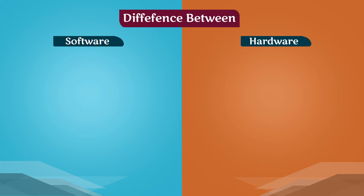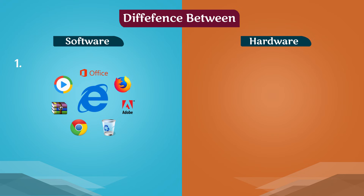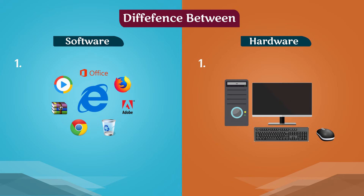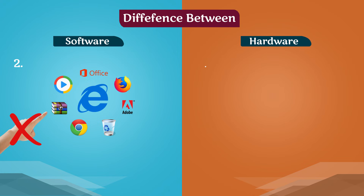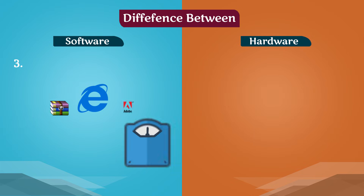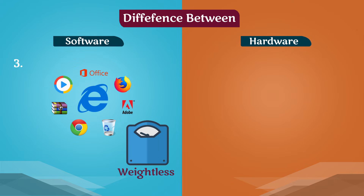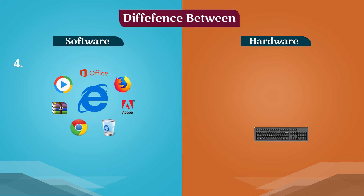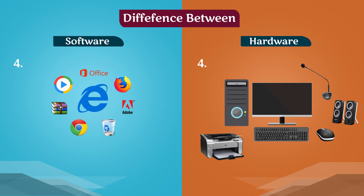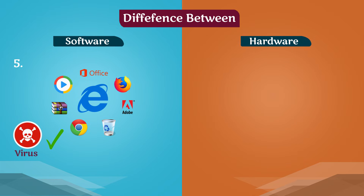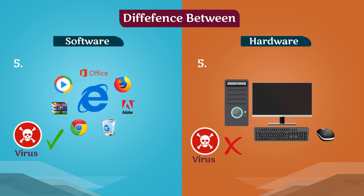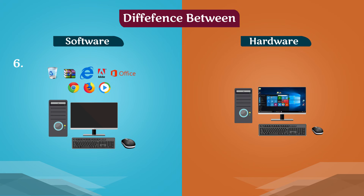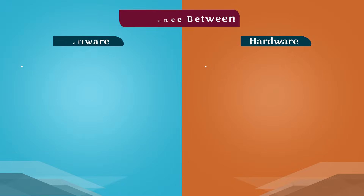The difference between hardware and software: A collection of programs is called software; physical parts of the computer are called hardware. We can't touch and feel software, but we can touch and feel hardware. Software is weightless, while hardware has weight. Application and system software are the types of software; input, output and processing devices are the types of hardware. A virus can attack software, but cannot attack hardware. Without software, computer hardware is useless, and software works on hardware.